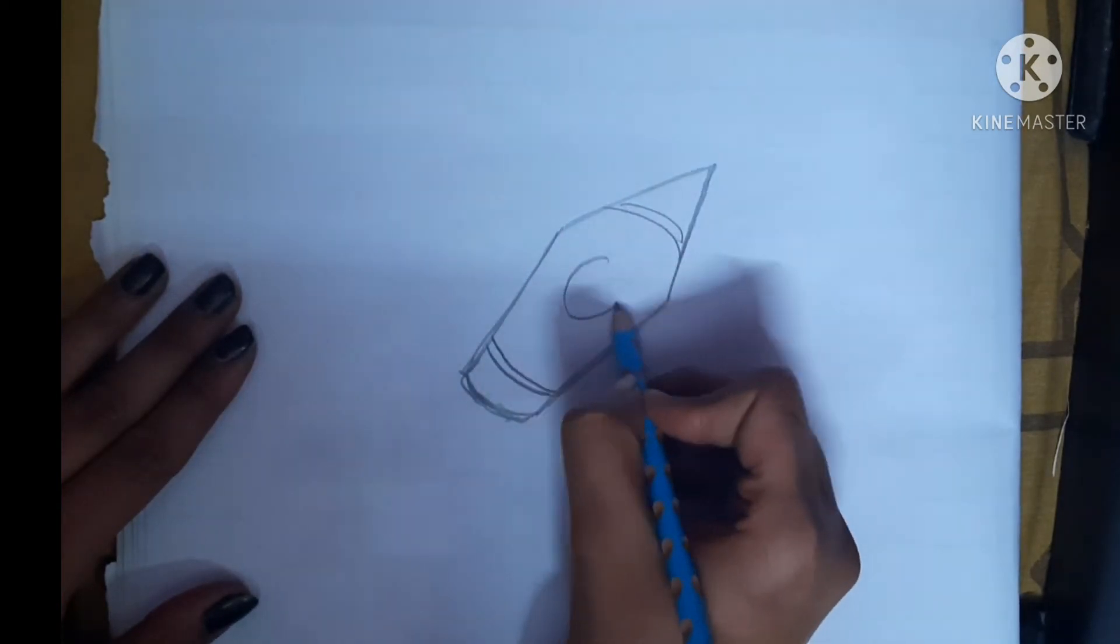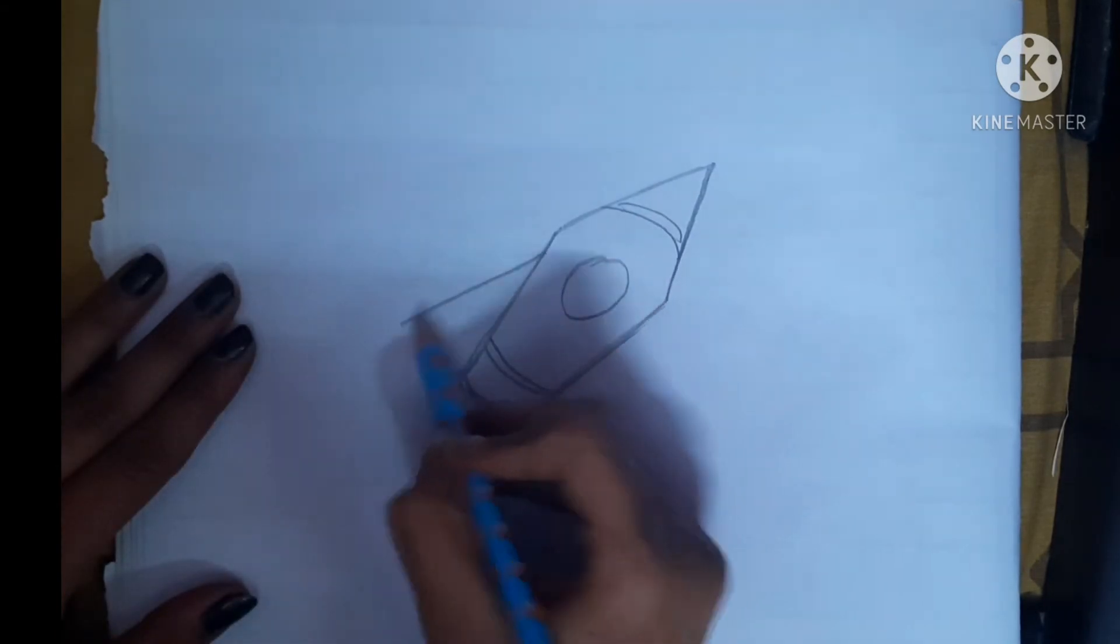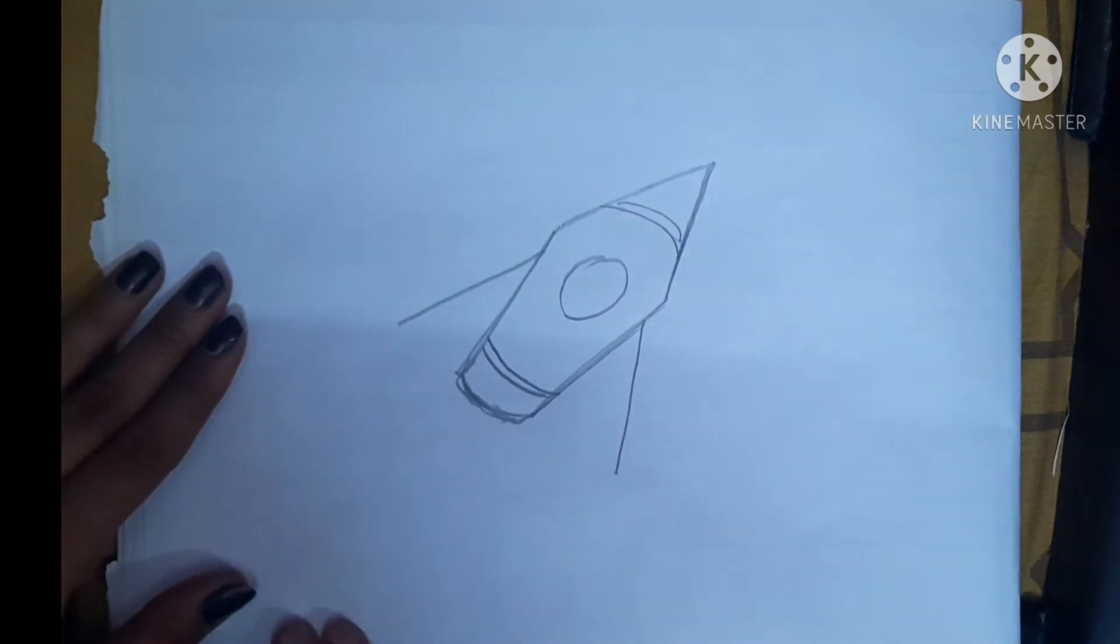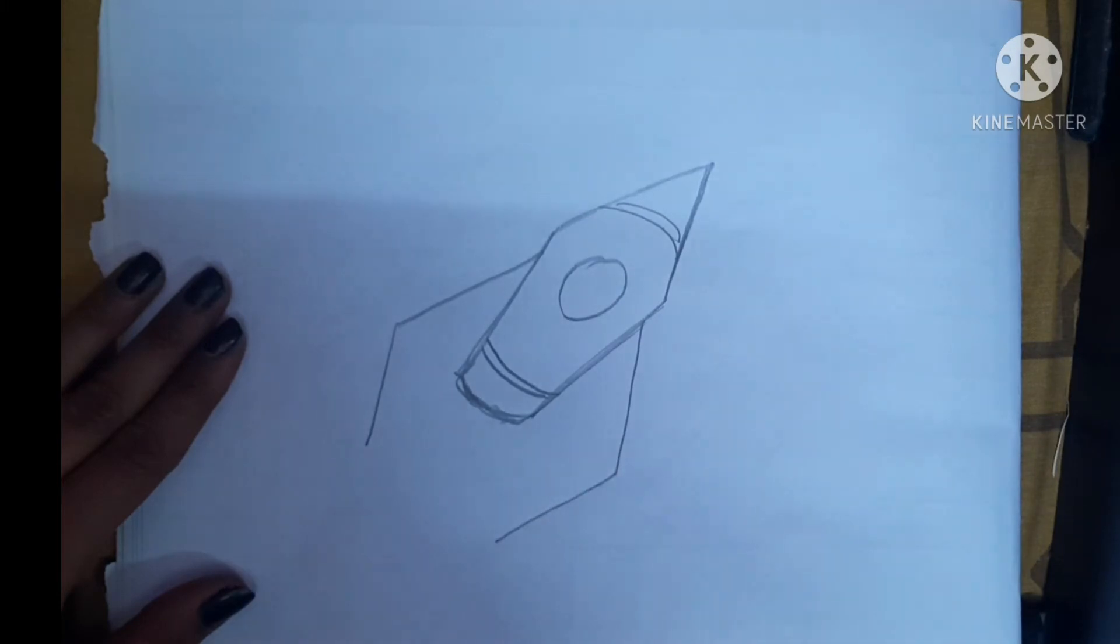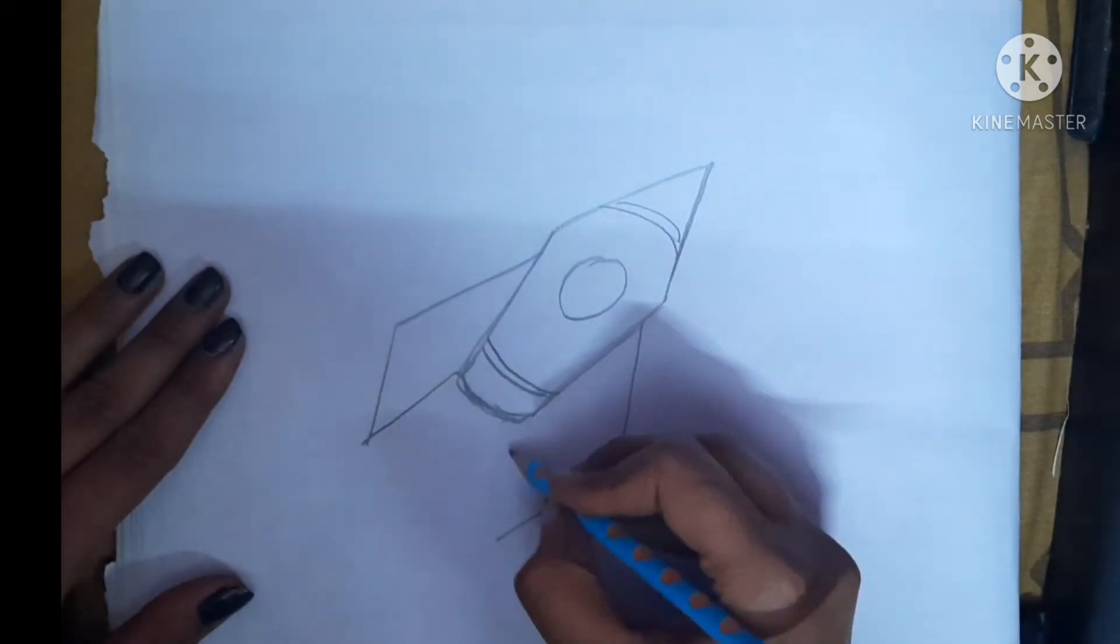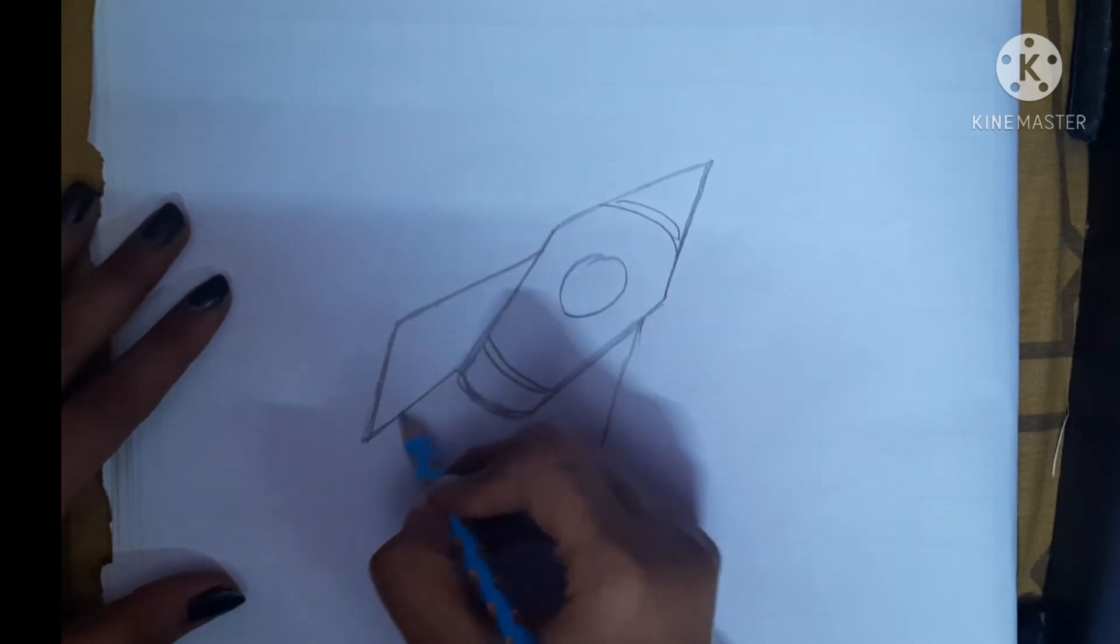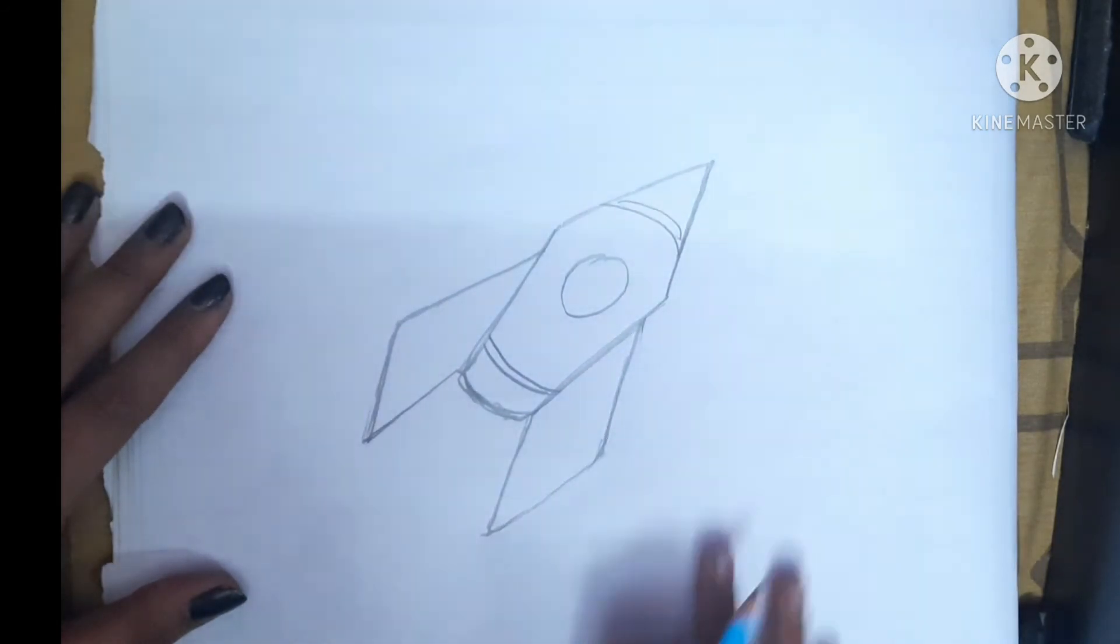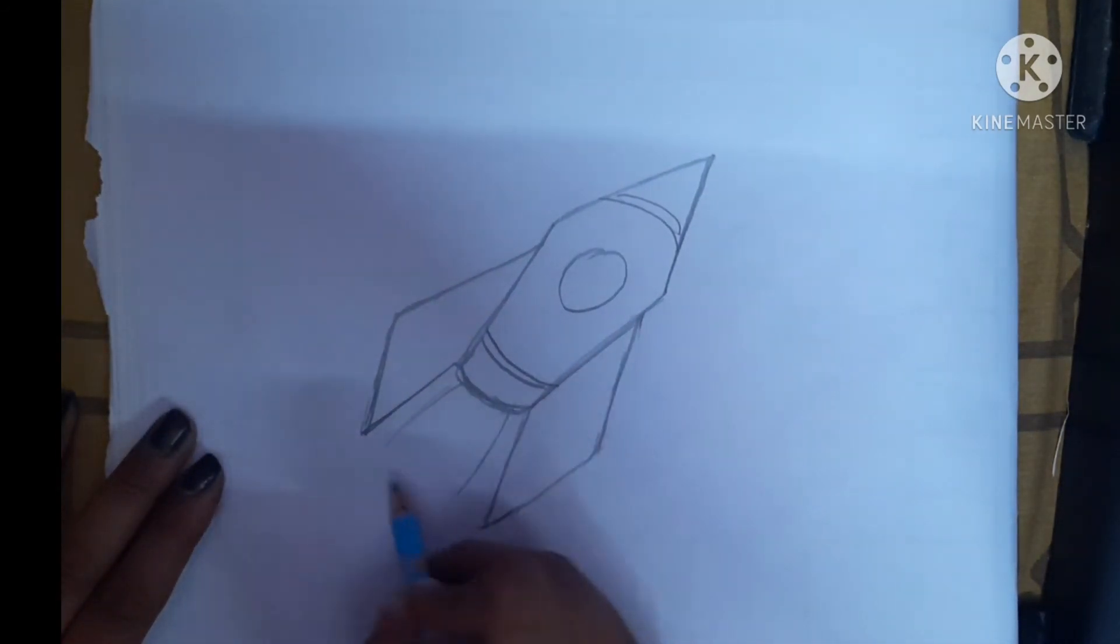Here make a circle here, and here draw two slanting lines again. Make two slanting lines again and join these. After this, make the fire like this.